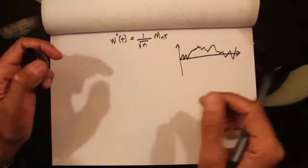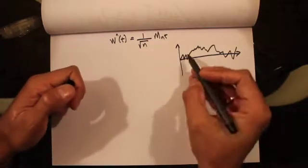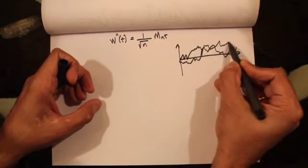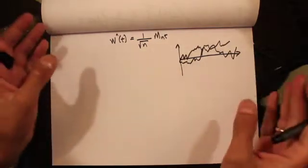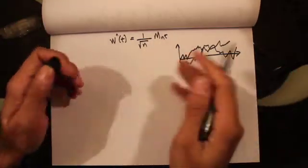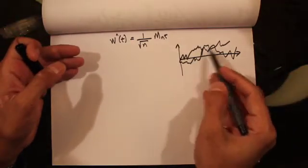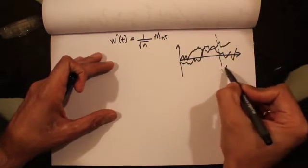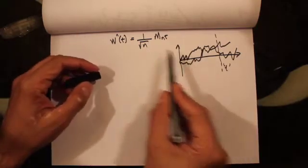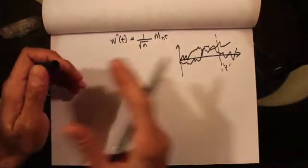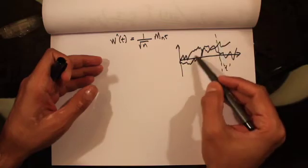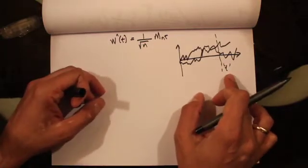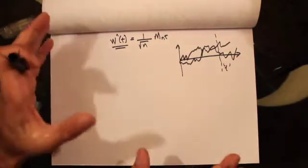If we conducted the experiment another time, we could get a different series of coin tosses and therefore a different path. So depending on the random series of coin tosses, we could get any number of different paths. What I want to do now is fix some time t and look at what the distribution of this process is at time t — that is, look at all the various paths crossing through t and find the distribution of those values.